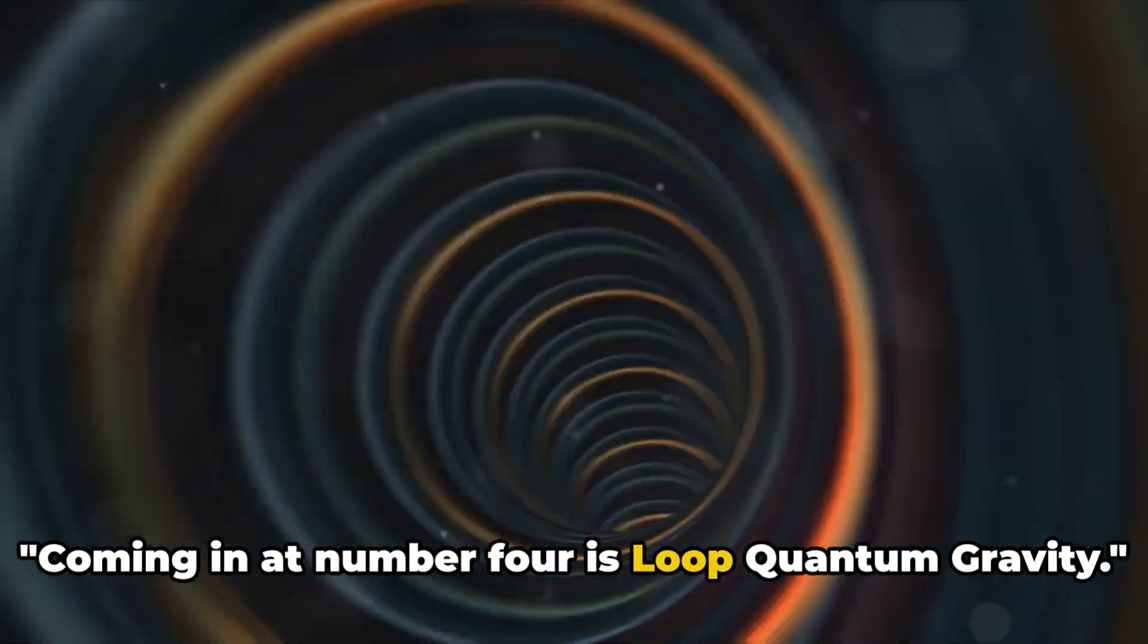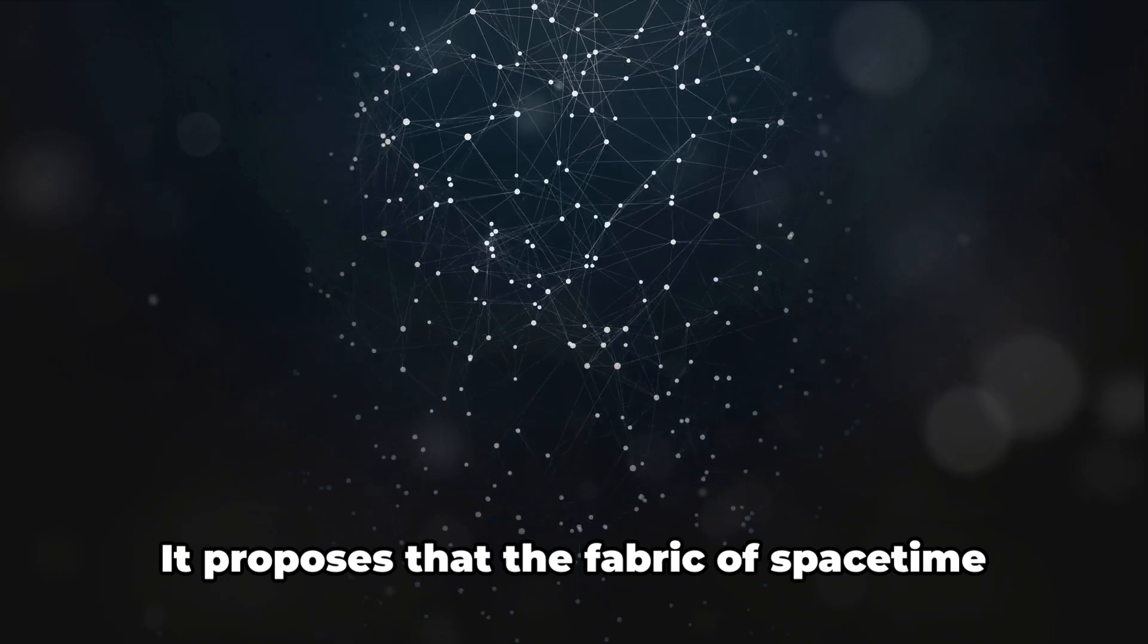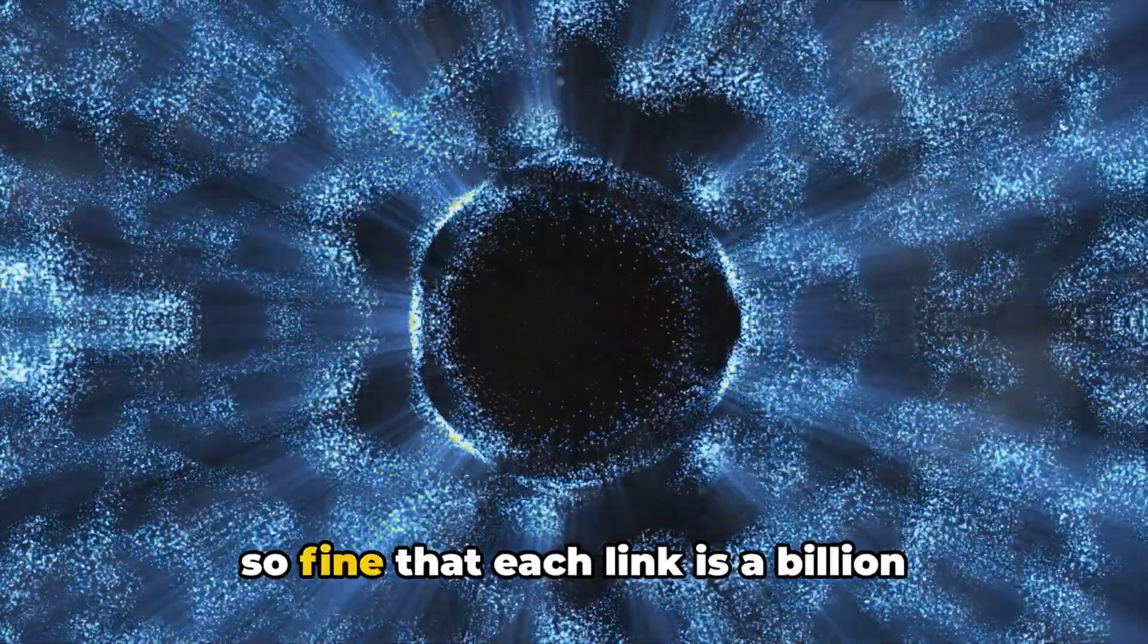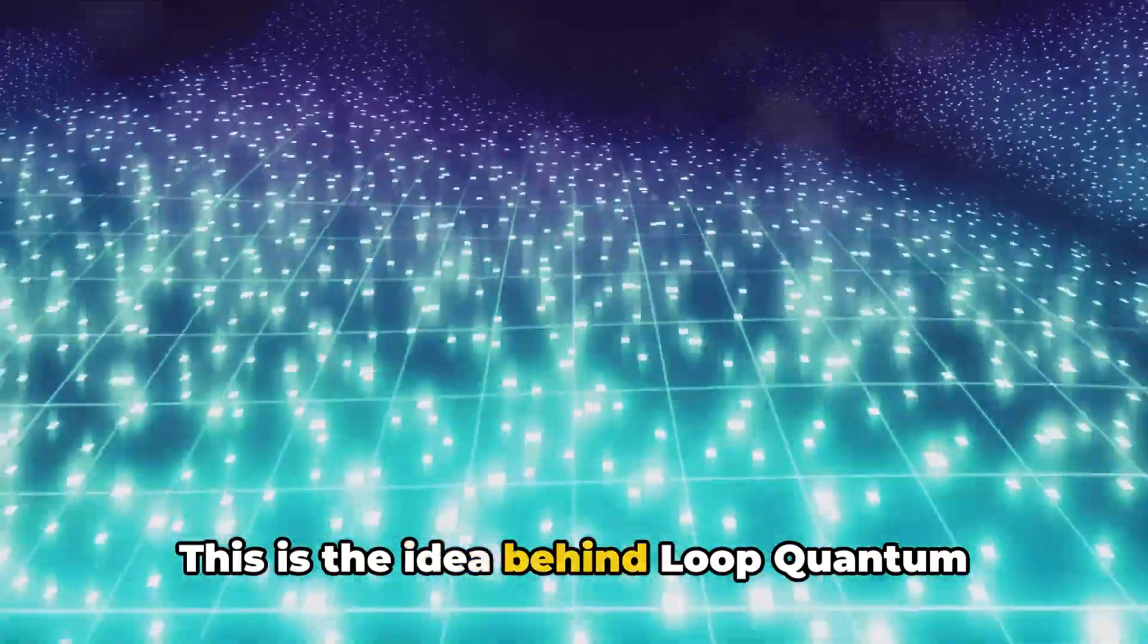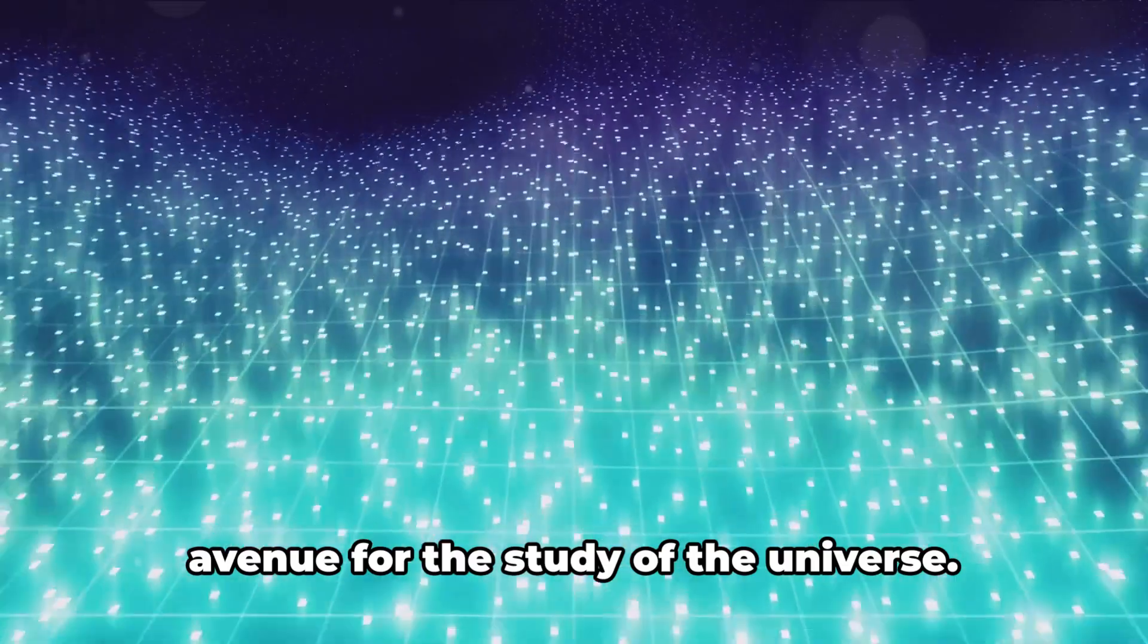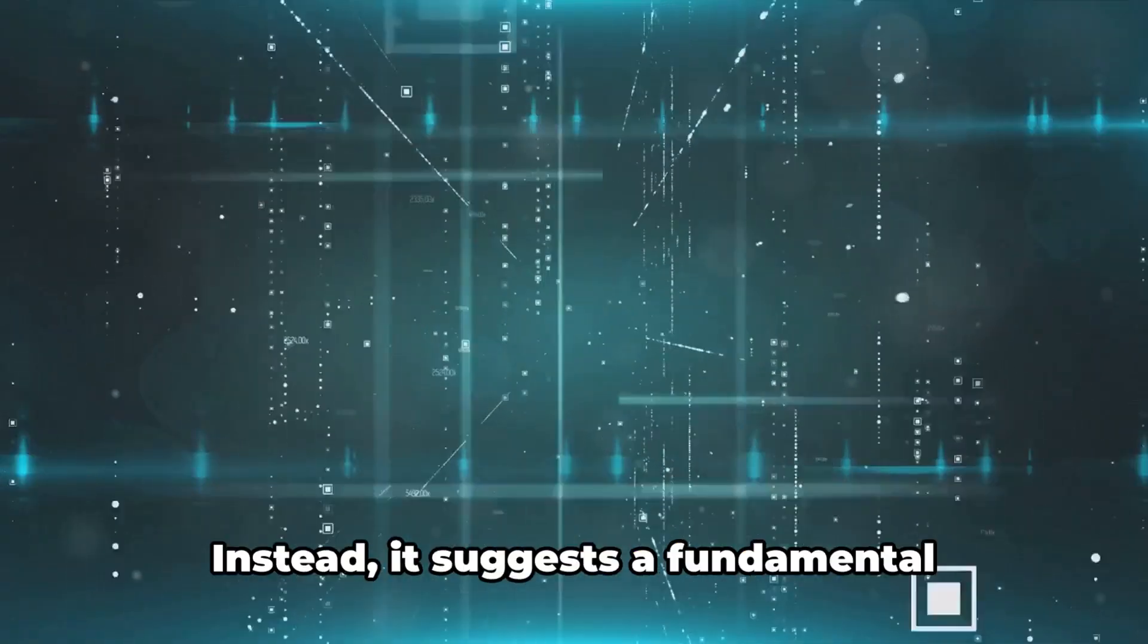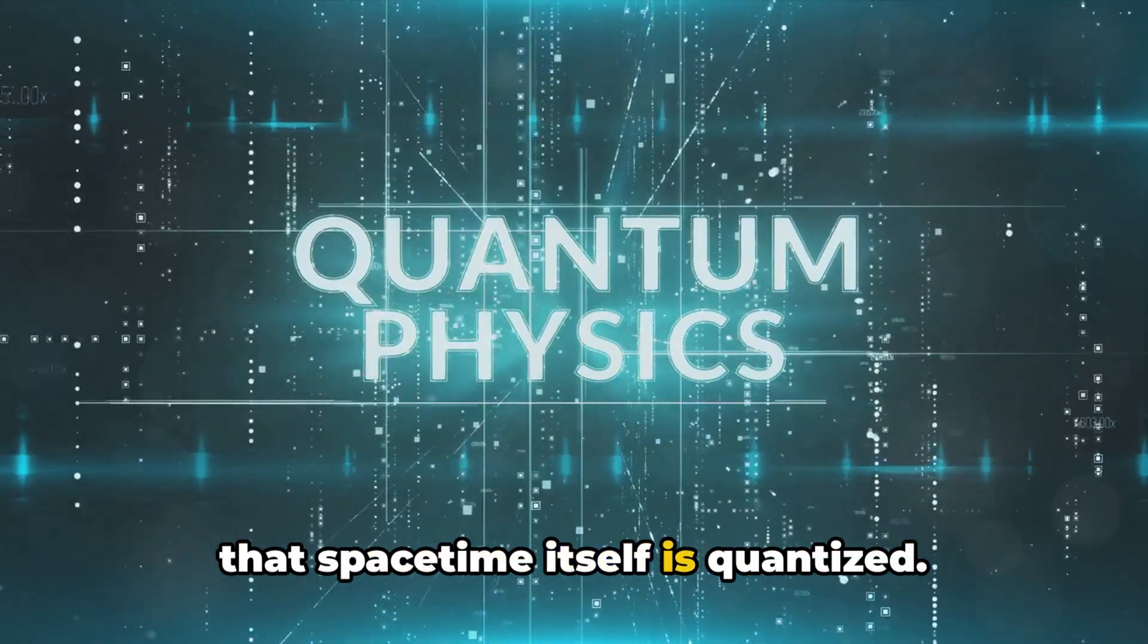Coming in at number 4 is Loop Quantum Gravity. Now, this is a theory that takes a bit of a different approach to the conundrum of quantum gravity. It proposes that the fabric of space-time itself is made up of tiny indivisible loops. Imagine, if you will, a mesh of thread so fine that each link is a billion trillion times smaller than an atomic nucleus. This is the idea behind loop quantum gravity, a radical departure from traditional physics and an exciting new avenue for the study of the universe.